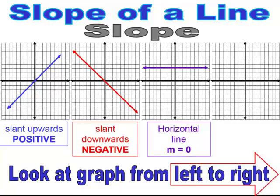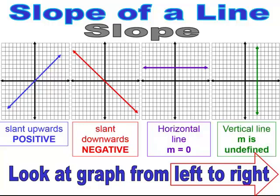When you have a horizontal line, the slope is zero. A vertical line has an undefined slope. When you're looking at a graph to determine if it's a positive or negative slope, look from left to right: if it's going up, it's positive; down, it's negative. A horizontal line has a slope of zero, and a vertical line has an undefined slope.